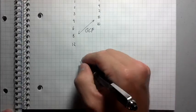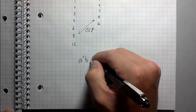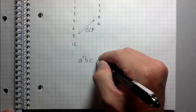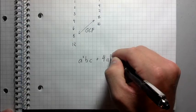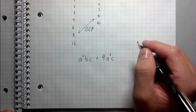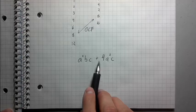Let's say that I had an expression like this, like a squared b c plus 4 a squared c. So sometimes you'll have a problem that says, you know, factor out the greatest common factor of an expression like this.